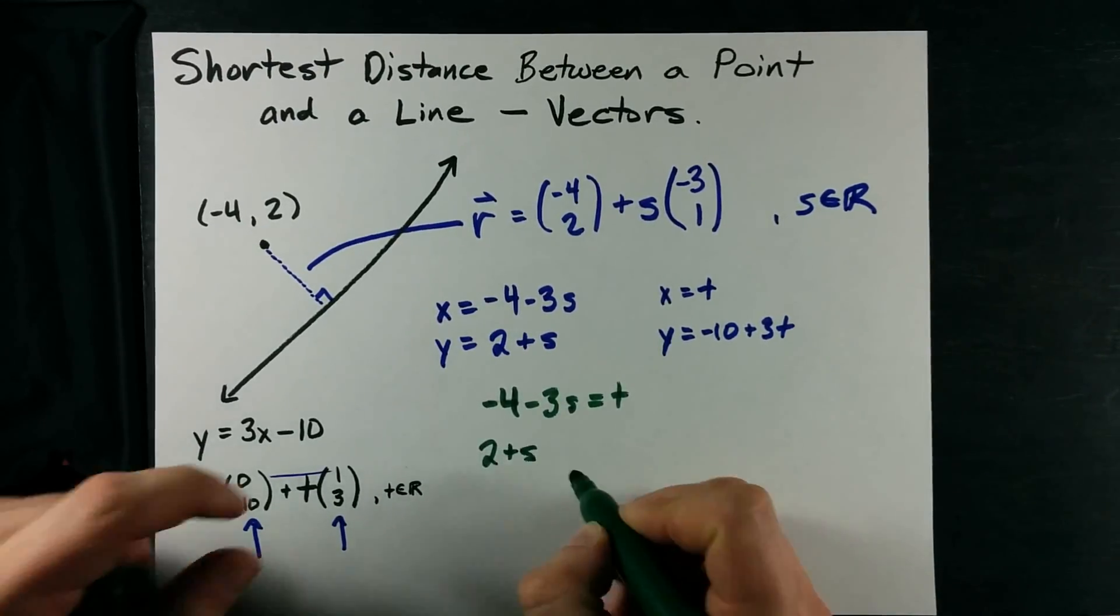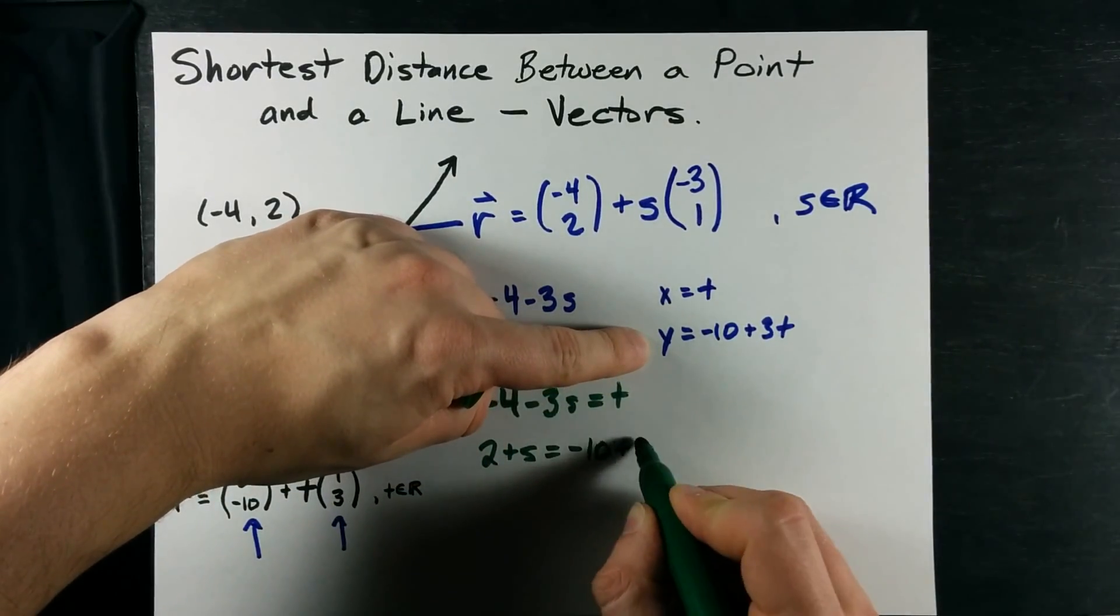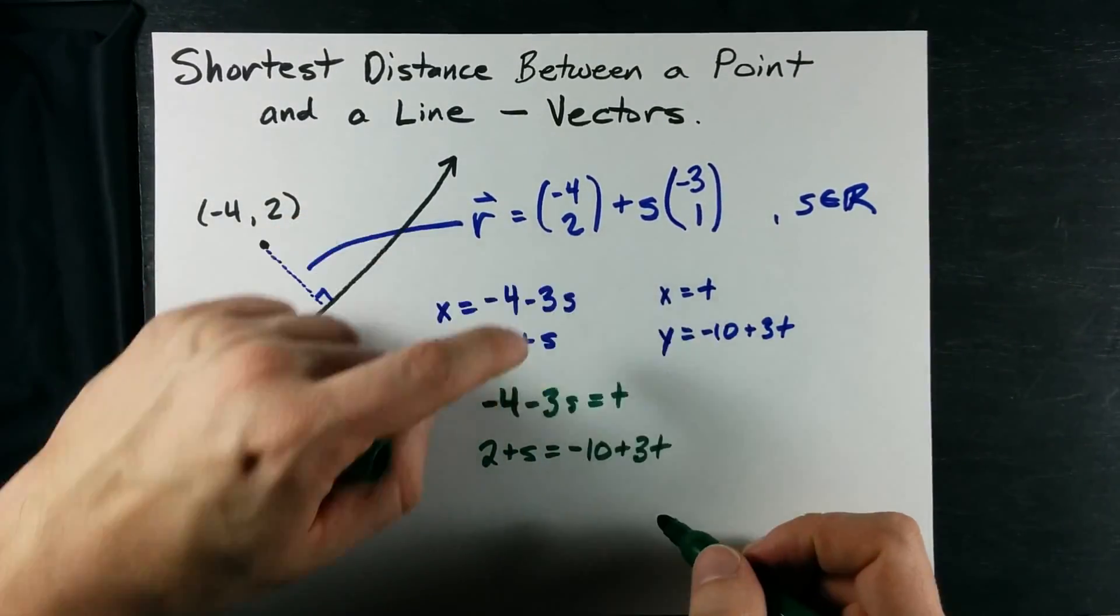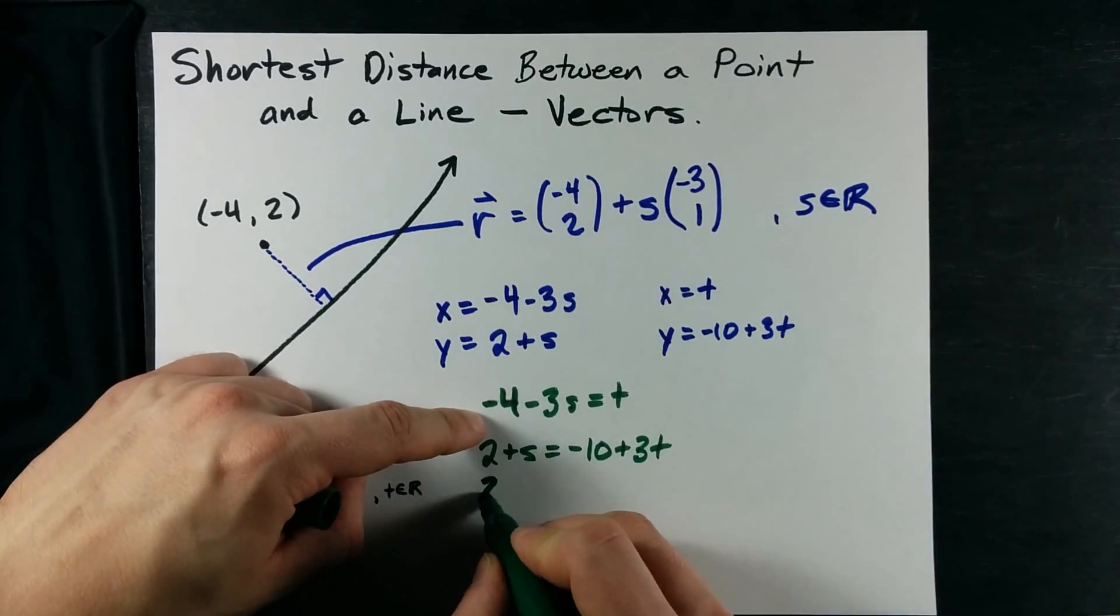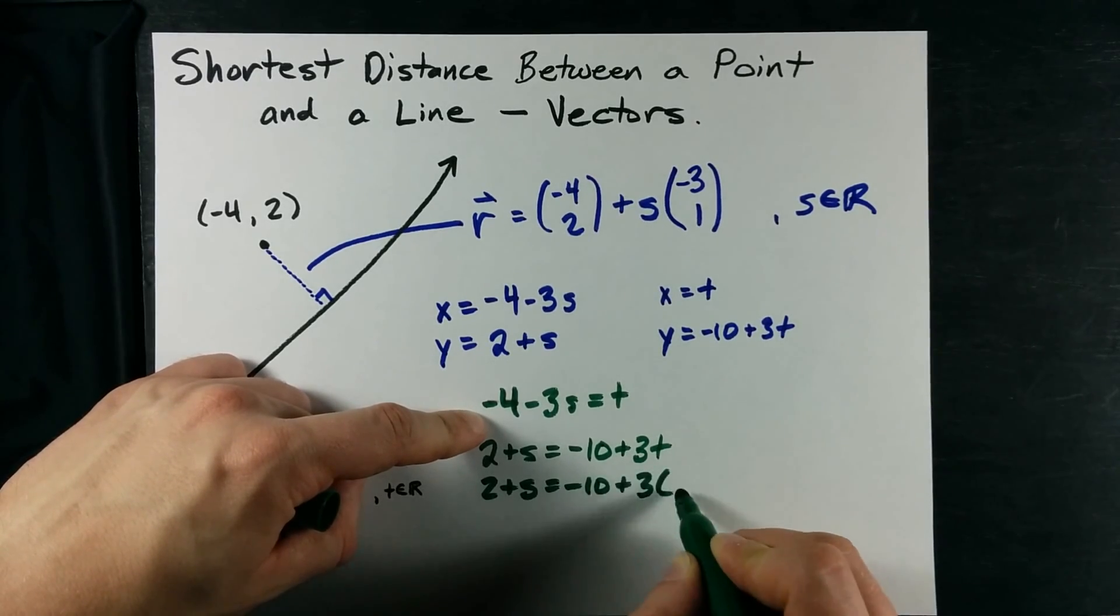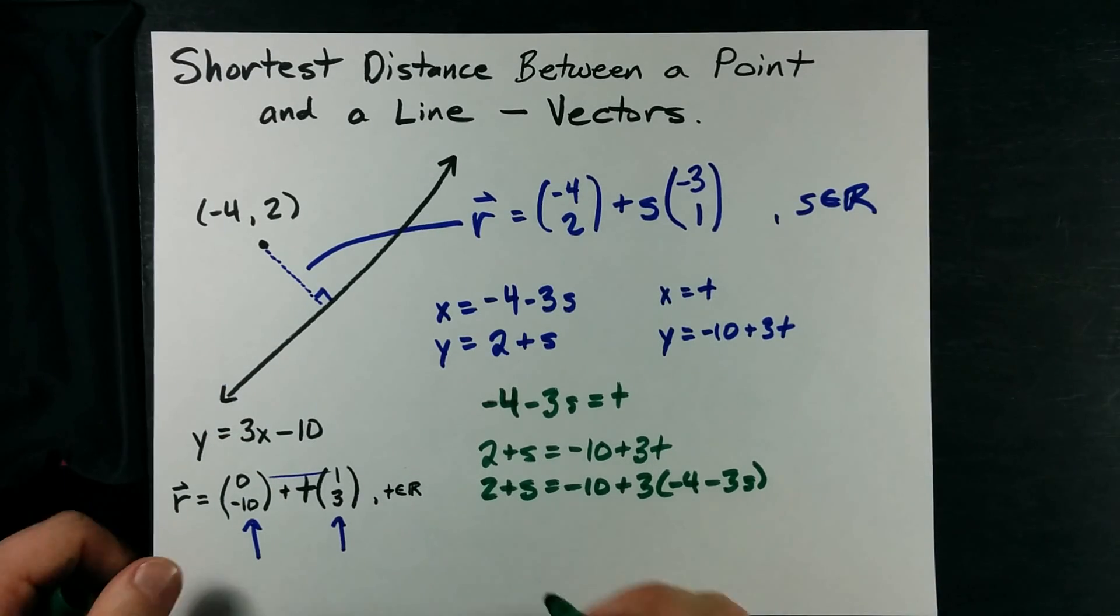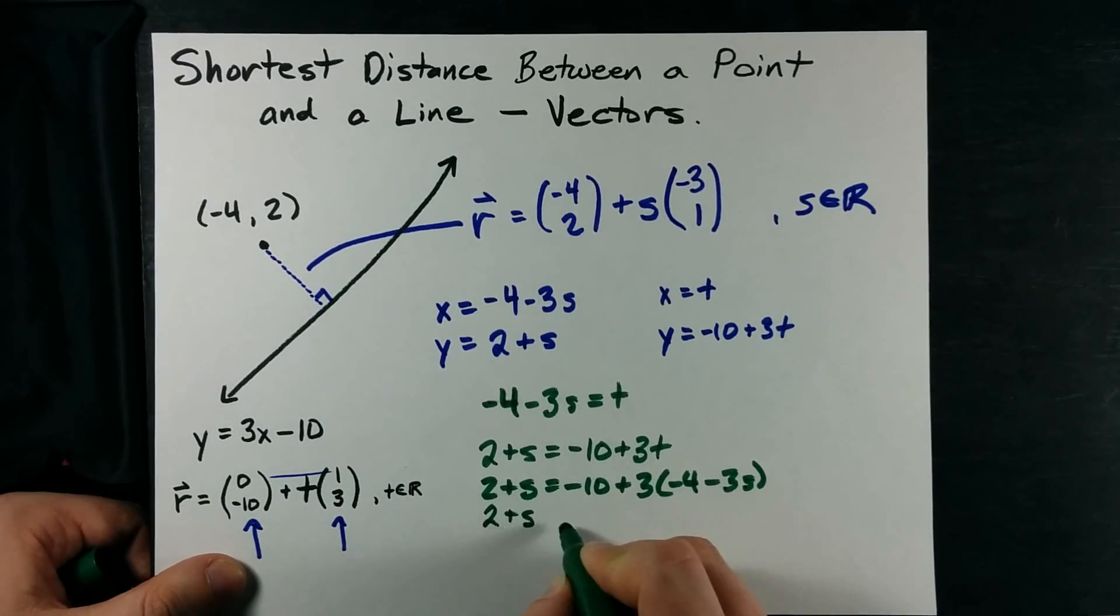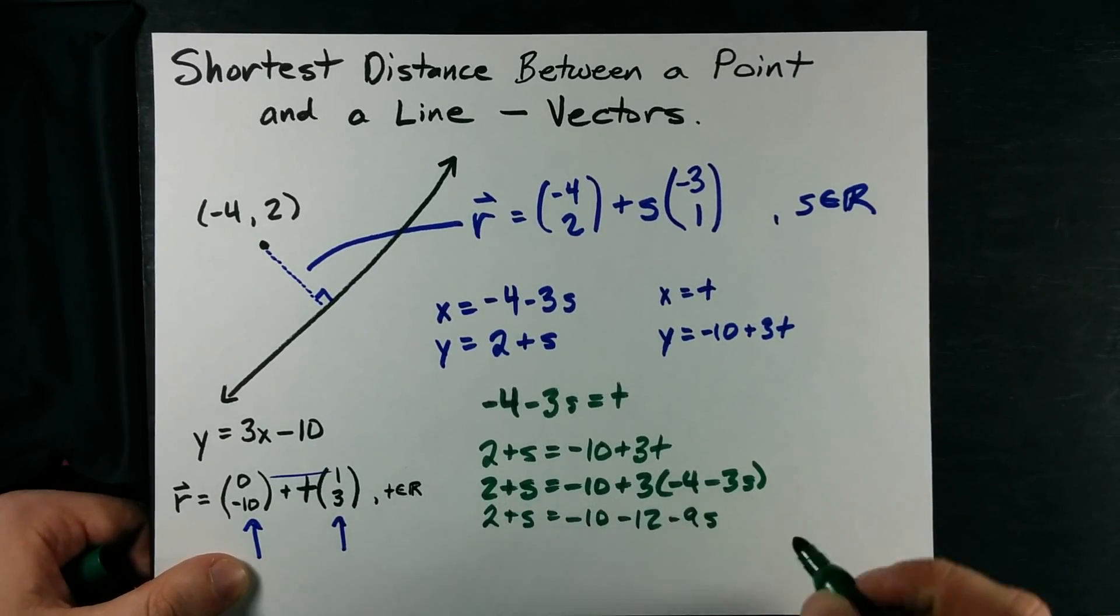And 2 plus s, that's y, equals negative 10 plus 3t. t is negative 4 minus 3s. So I'm going to do a little substitution. Negative 4 minus 3s wherever I saw t. And from here, I believe it's just solving a linear equation. Negative 10 minus 12 minus 9s. That's me multiplying the 3 through.